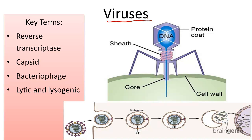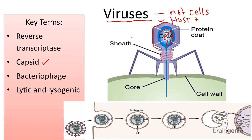Viruses are not cells. They cannot carry out metabolic processes or replication outside of a living cell, requiring some sort of host. A virus uses that organism's DNA or RNA to copy its own genetic material. Viruses are comprised simply of a bit of genetic material, like DNA or RNA, and a protein coat called a capsid.